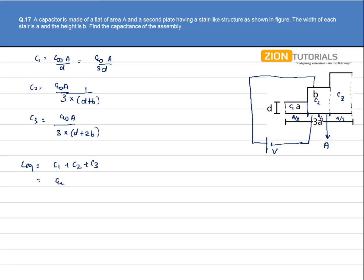We have ε₀A/3D plus ε₀A/3(D+B) plus ε₀A/3(D+2B).